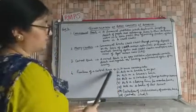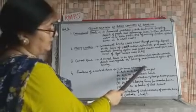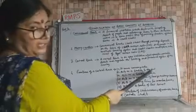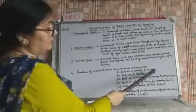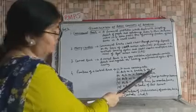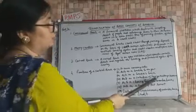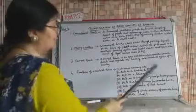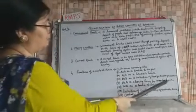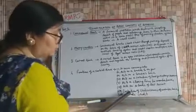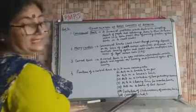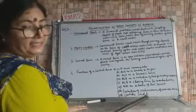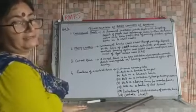Functions of a central bank: it issues currency notes — none other than the RBI can issue notes. It acts as a banker to the government, and as a banker's bank, meaning commercial banks take loans from it. It acts as a custodian of foreign exchange reserves, as a clearing house for member banks, and as a lender of last resort. It is also the custodian of cash reserves of member banks, and it controls credit by making monetary policy through quantitative and qualitative credit control measures.